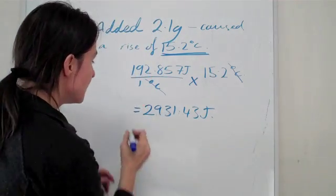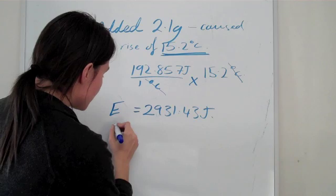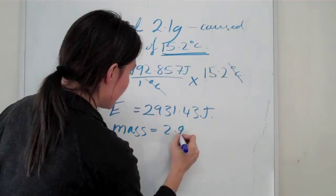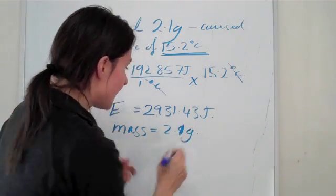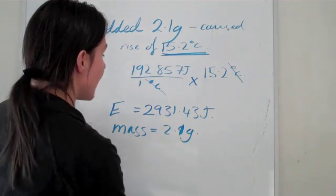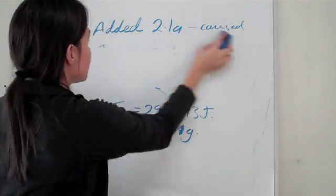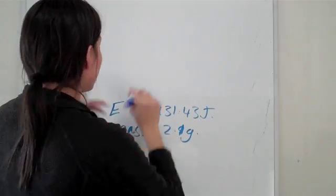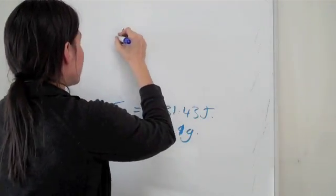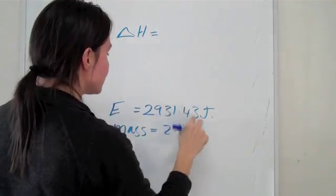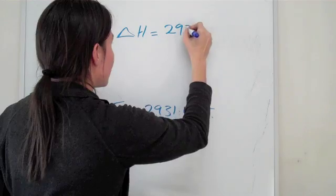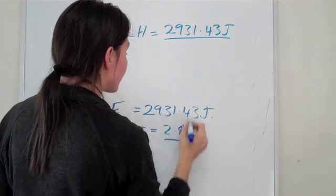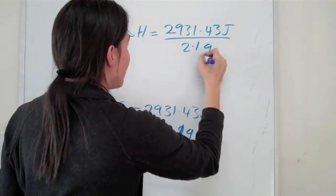So if we multiply it by 15.2 then essentially what we'll get is 2931.43 joules. So that's how much energy the pizza provided. This is the energy of the pizza. Now we also know the mass of the pizza is 2.1 grams. And what we can figure out now is the delta H of the pizza. So delta H can be expressed as kilojoules per something, per gram or per mole.